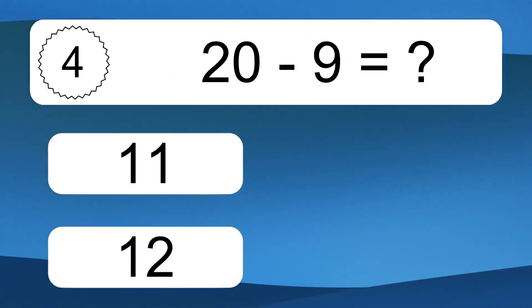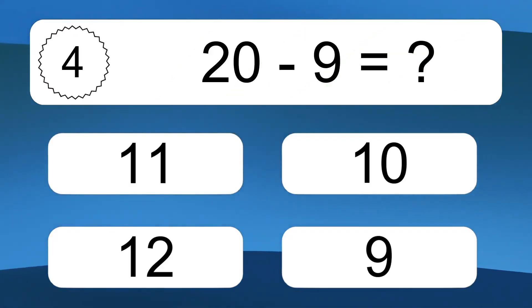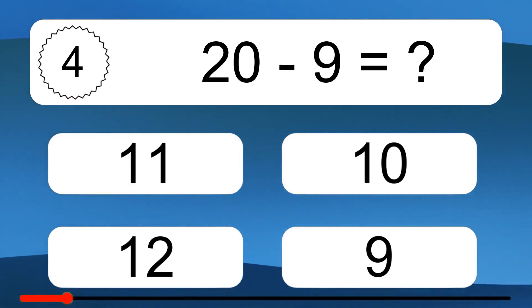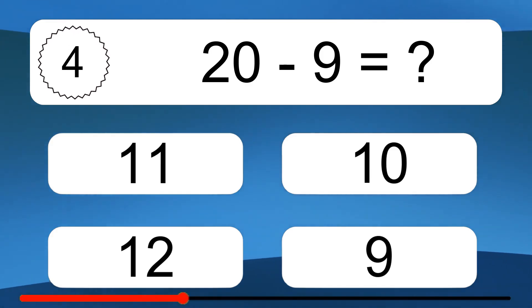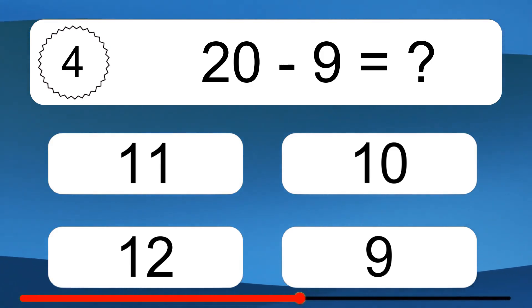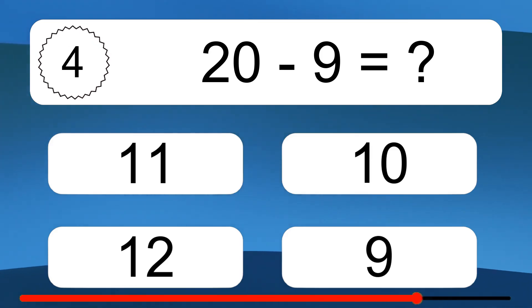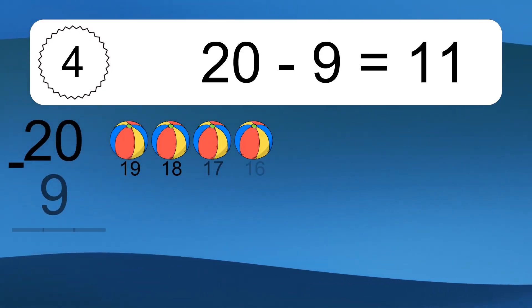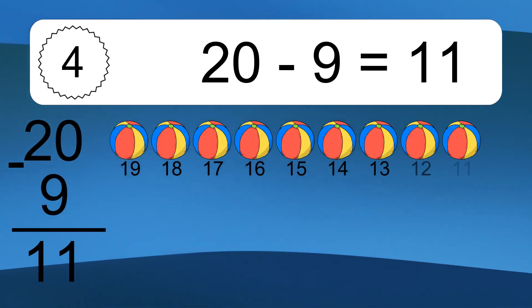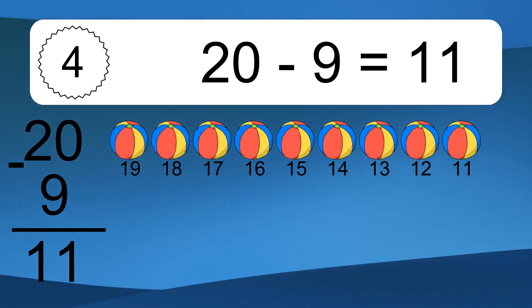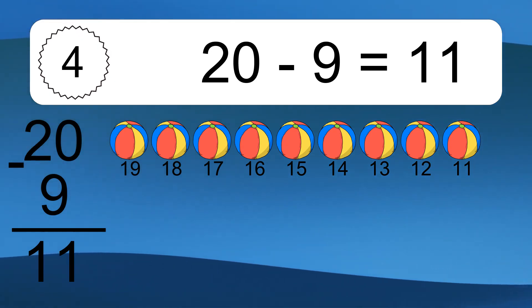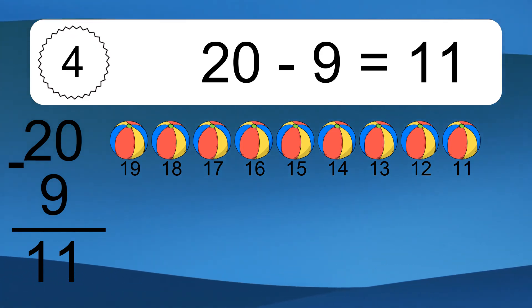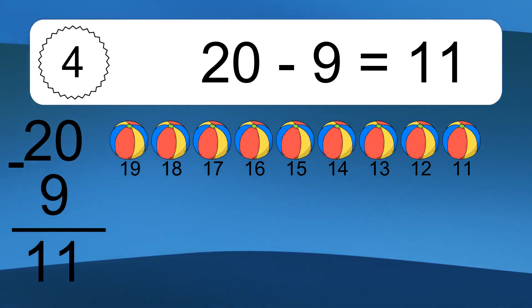20 minus 9 equals what? 20 minus 9 equals 11. Let's count it: 19, 18, 17, 16, 15, 14, 13, 12, 11.